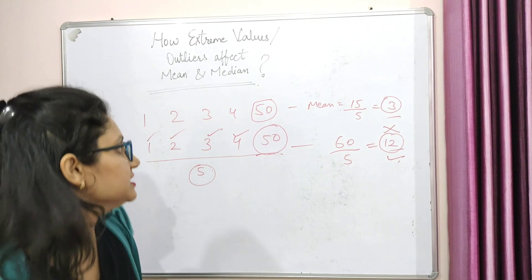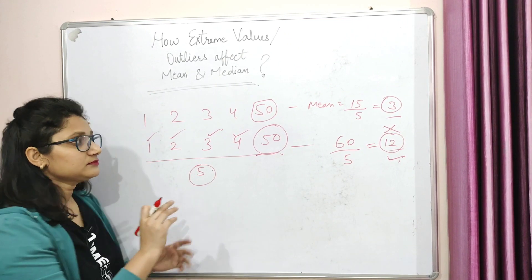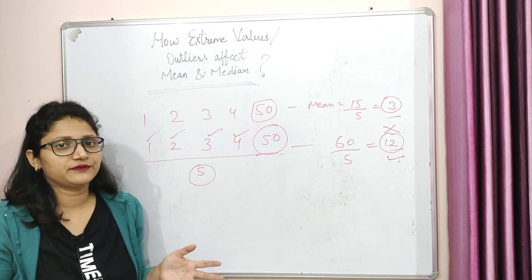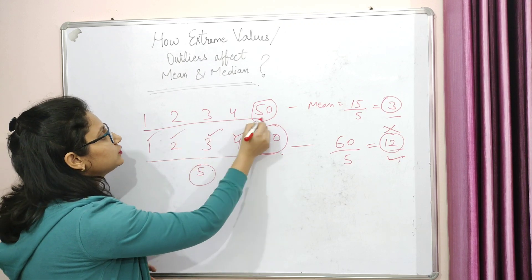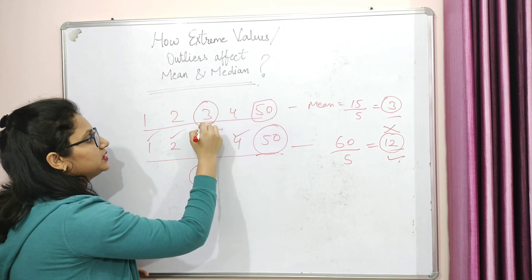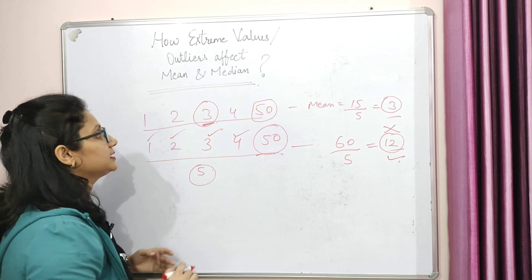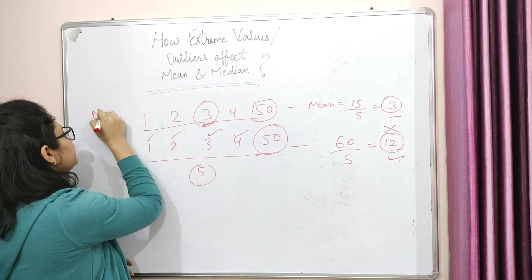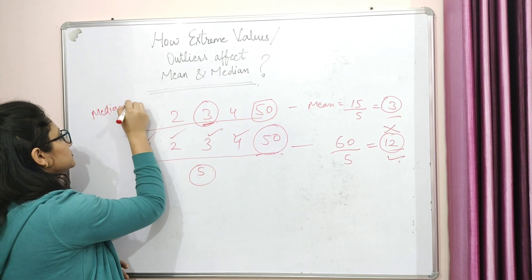Now coming to the median. So if you talk about the median, as you know median is your middlemost value. So if you remove the median from these 5, then the third position item, the third item will be your median. Okay? So what is your median? What is your median? 3.